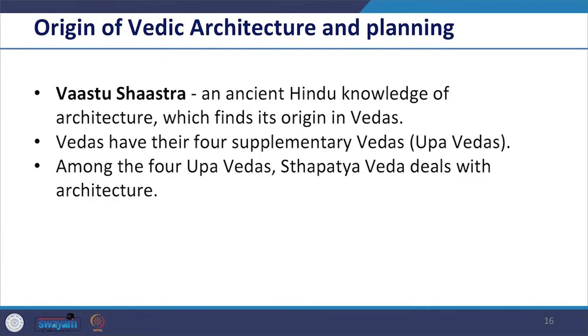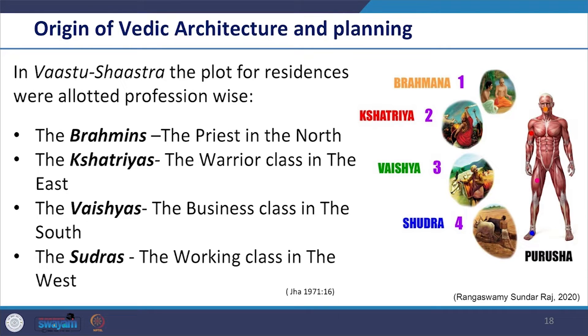Vastu Shastra, the ancient science of designing and constructing buildings, is a part of Sthapathya Veda considered as an applied knowledge subordinate to the Atharva Veda which is the fourth Veda. It is interesting to see that in Vastu Shastra the plots for residences were allotted profession-wise, which indicates a developed understanding of zoning. Like Brahmins the priests were located in the northern part of the city, while the Kshatriyas the warrior class in the eastern part, the Vaishyas the business class in the southern part, and the Shudras the working class were located in the western part of the city. So we can see how land zoning was done in this period, however it was based on profession, which also indicates the strong social structure which followed segregation at that time.